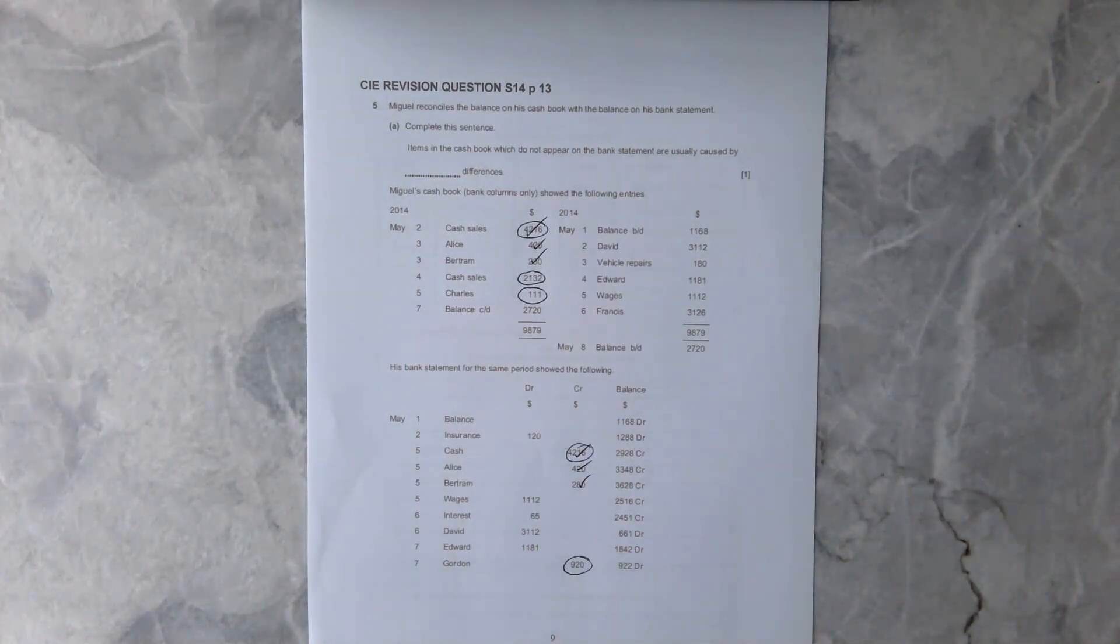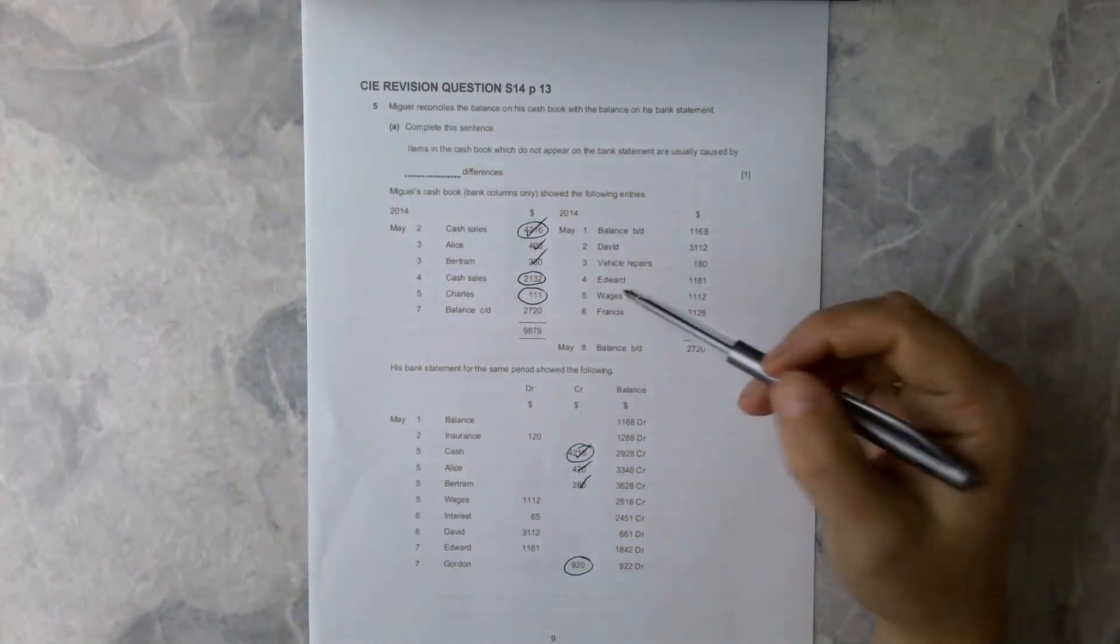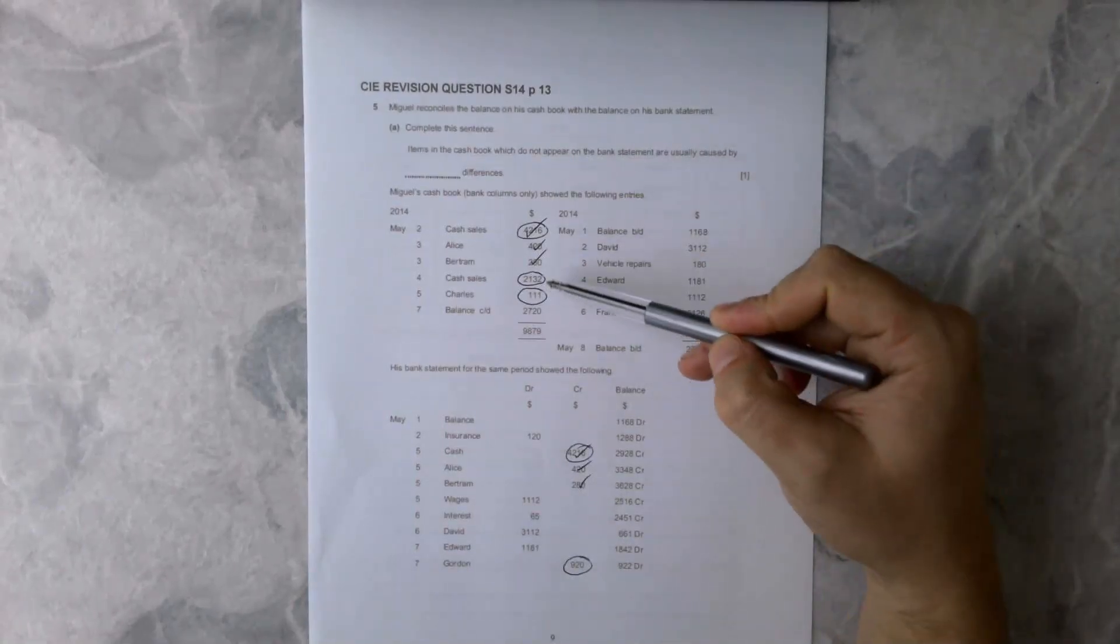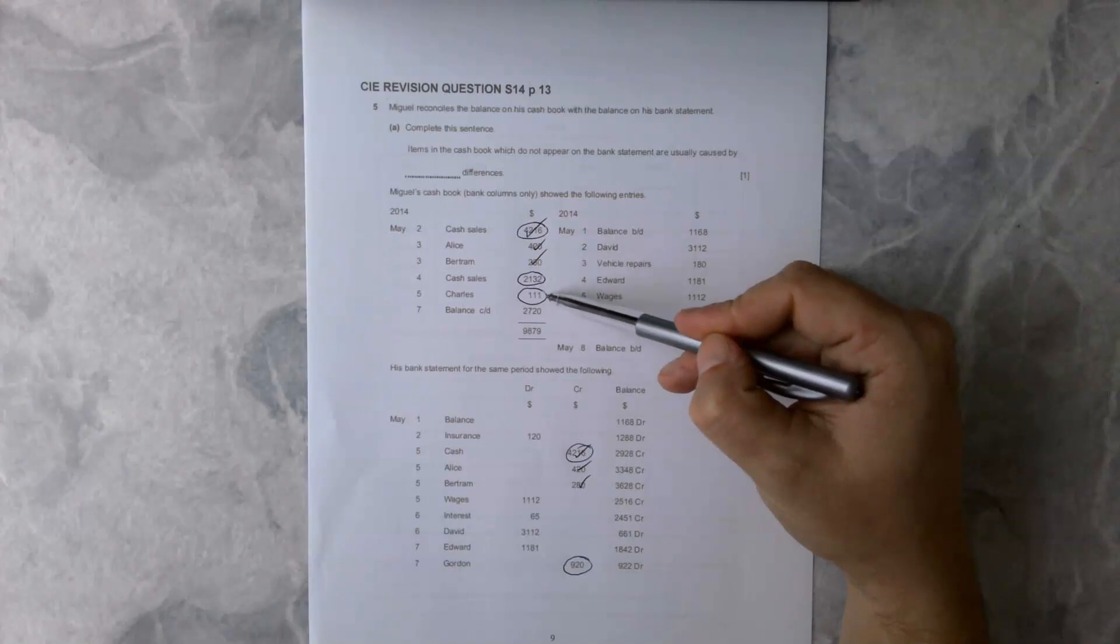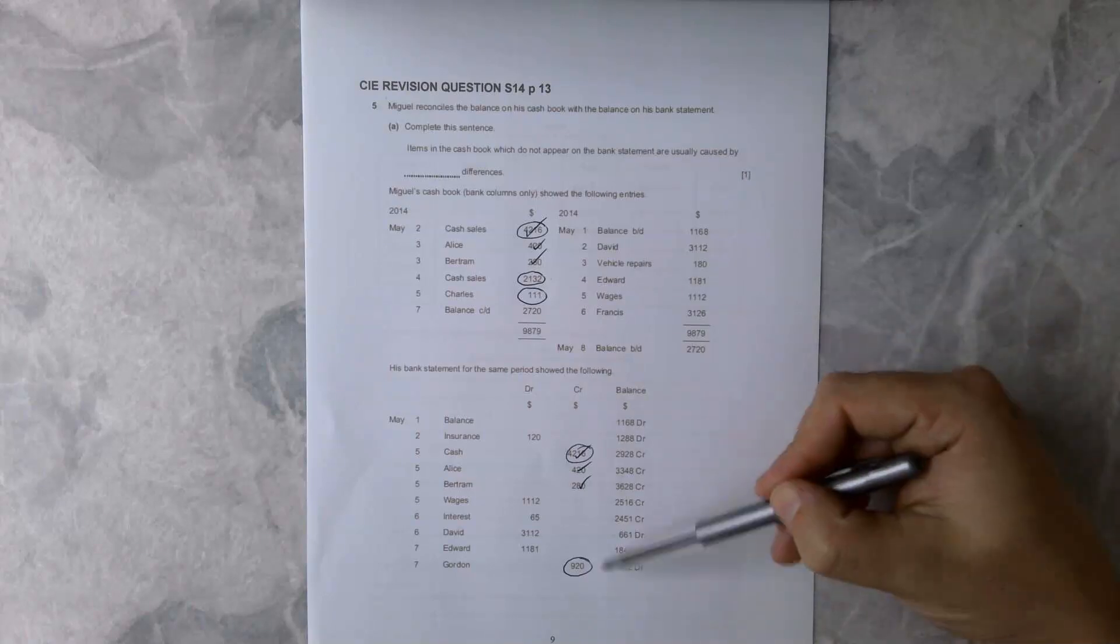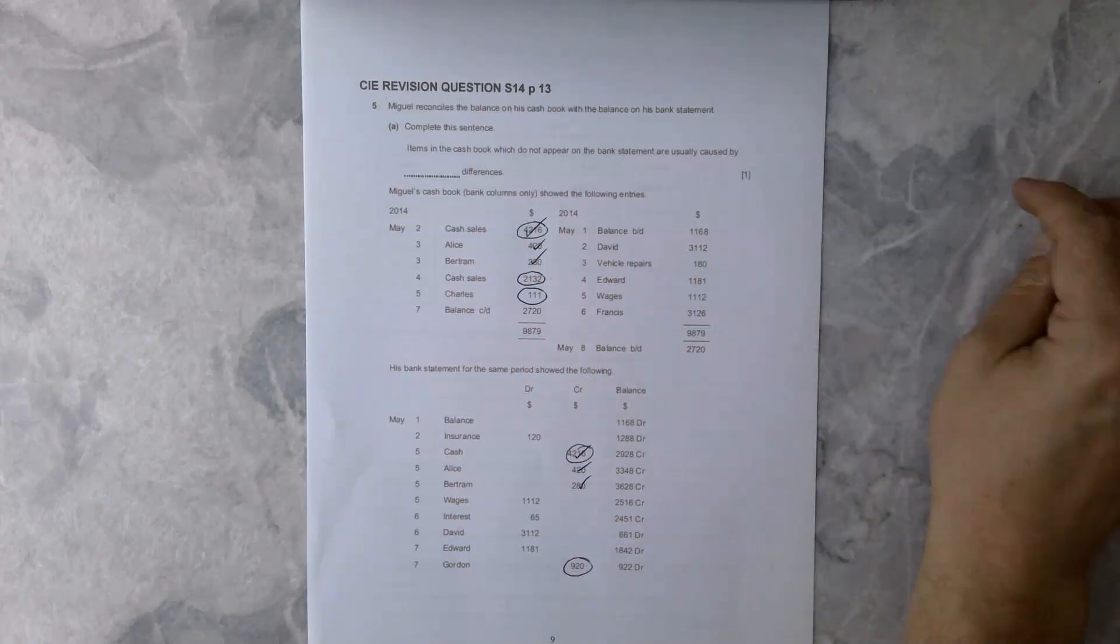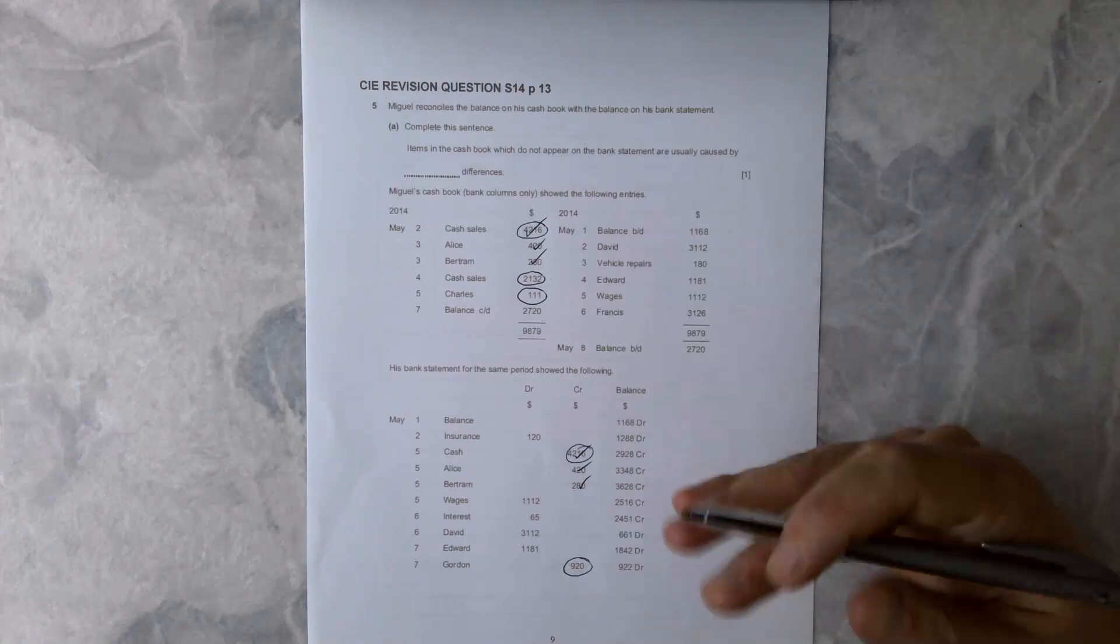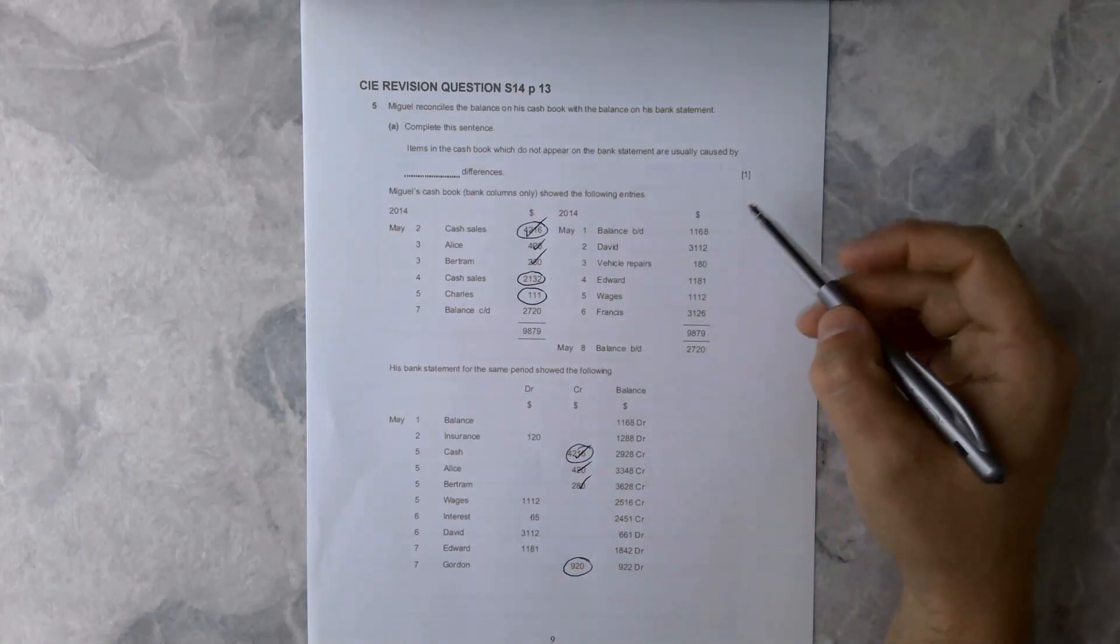We're also missing this one here from the bank statement. Going on from then, we've got these figures that are missing. Cash sales, the Charles account at 111 is all missing from our bank statement, and the 920 from Gordon is missing from our cash book.